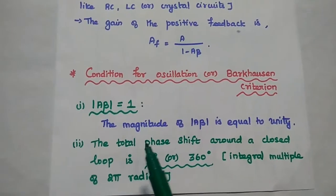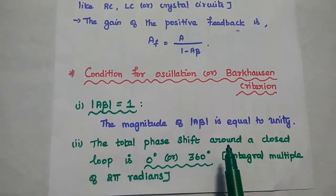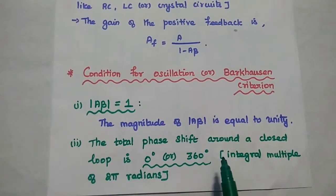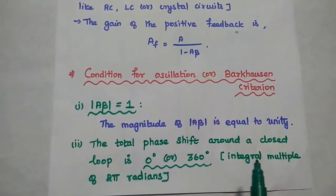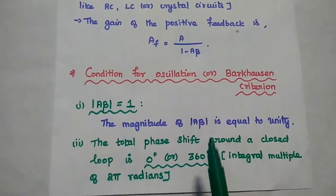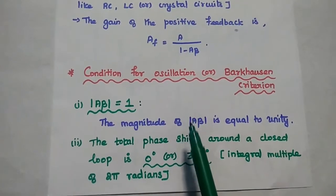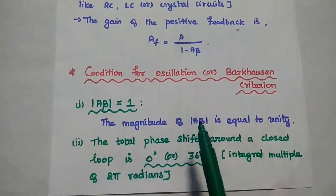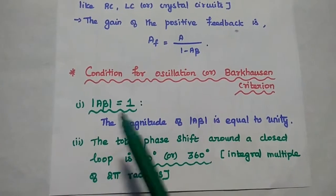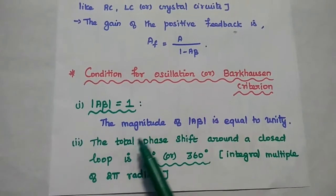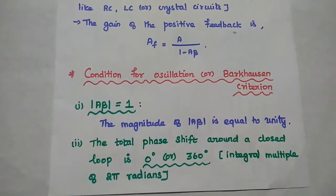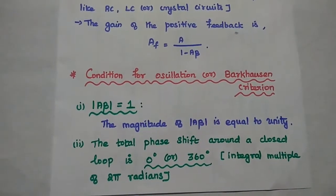The next one is the total phase shift around a closed loop is 0 degree or 360 degree. So in another term, we can say integral multiple of 2 pi radians. So whichever circuits satisfy these two conditions can be used as oscillators. Do you all understand this? A beta is equal to 1. Total phase shift is 0 degree or 360 degree. It is also known as Barkhausen criterion.